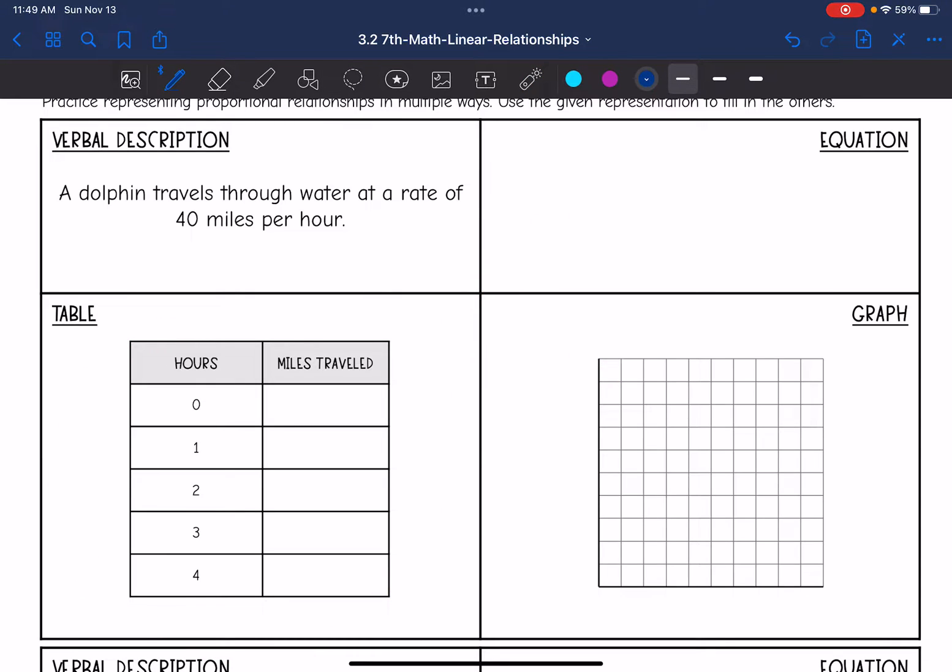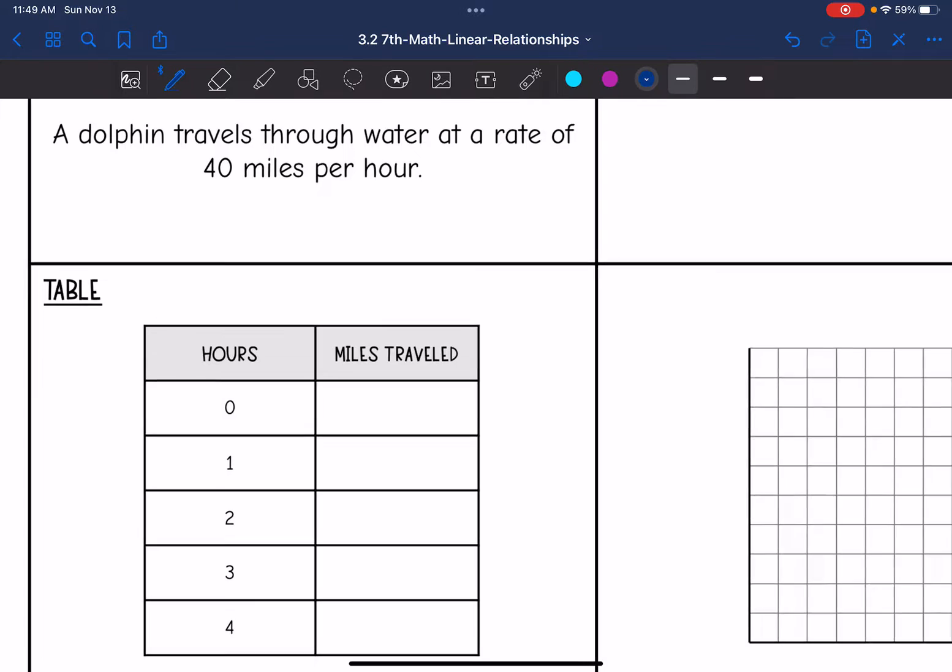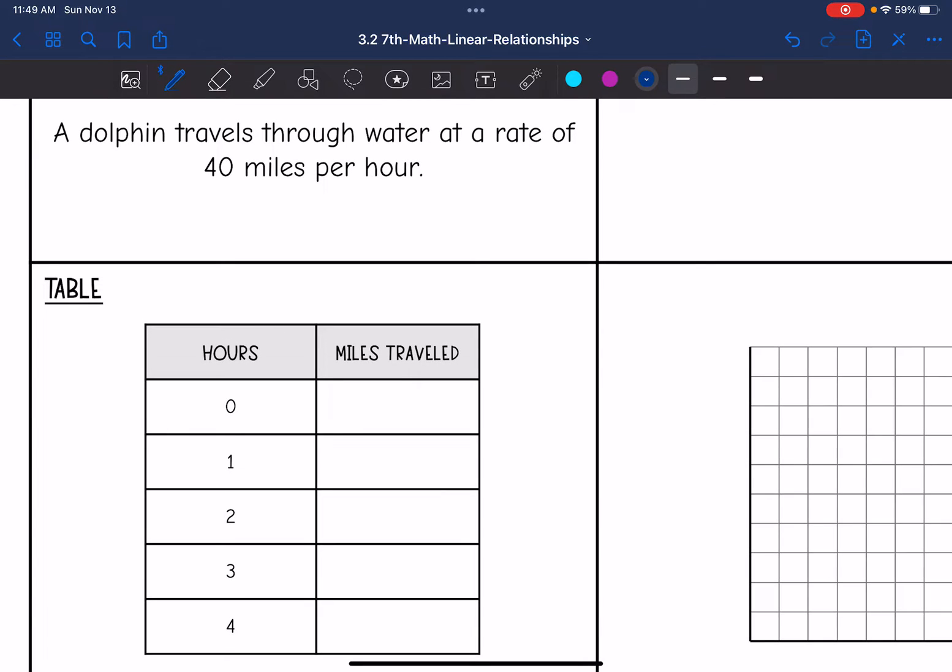A dolphin travels through water at a rate of 40 miles per hour. So if it's traveled zero hours, that means it's gone zero miles. And then after one hour, since it's going 40 miles per hour, it's gone 40 miles.